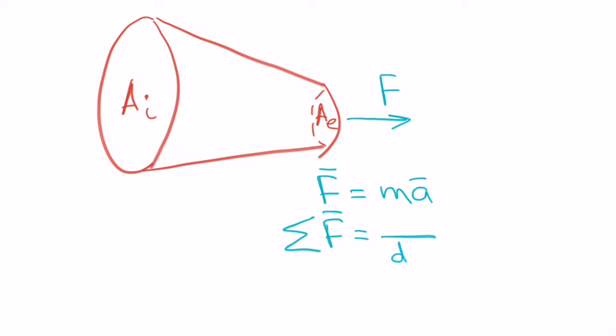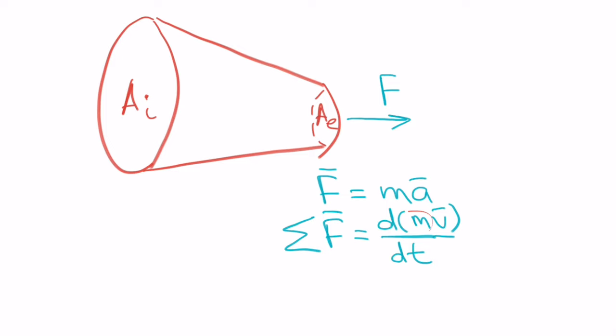And on the right side we have the time derivative of momentum. So this generalized Newton's second law takes care of many more cases. For example, when the mass of an object is changing, as we will see with the rocket equation. Okay, now let's try to simplify this equation.